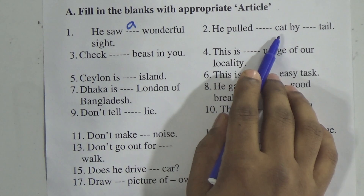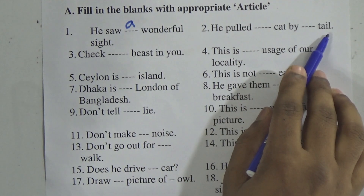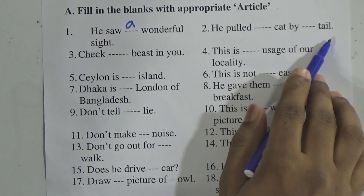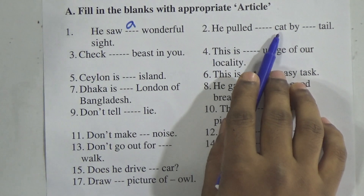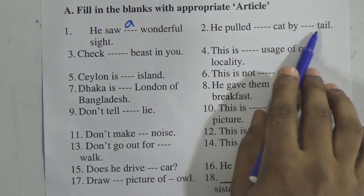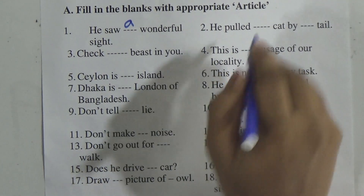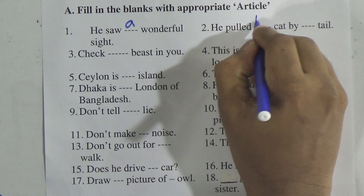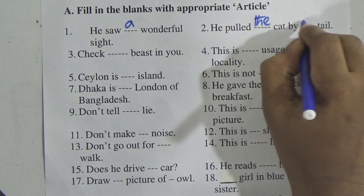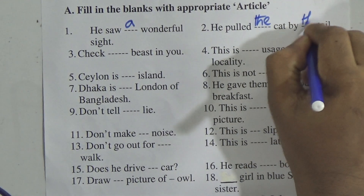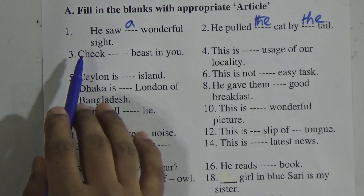He pulled the cat by the tail. Here 'cat' is specified and definite, and 'tail' is also definite. So we use 'the': He pulled the cat by the tail.